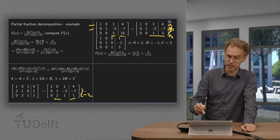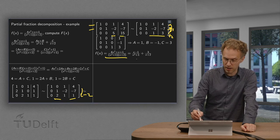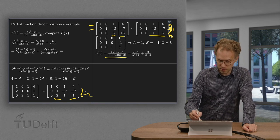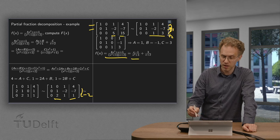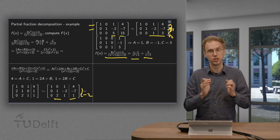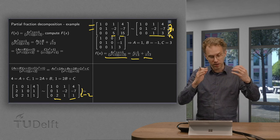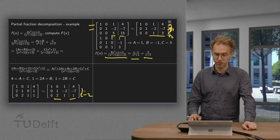So now we have separated our fraction. We have rewritten our f of x as ax plus b, so that becomes x minus 1, plus c over x plus 2. So there we go. Now we have done the hard work. And ideally we can now integrate the final terms.